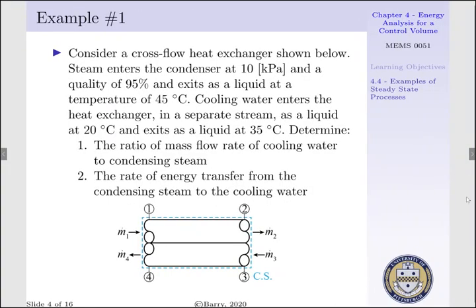To analyze how heat exchangers work, let's look at a simple example. Let's consider a cross-flow heat exchanger as shown in the figure below. We have one tube up top where M.1 enters and M.2 exits — this is a single tube. This is in contact with another tube where M.3 enters and M.4 exits. These two tubes are separated by a physical wall, and the heat exchange process occurs between them.